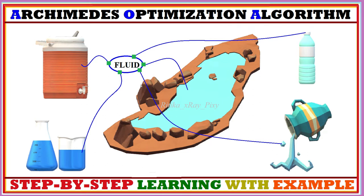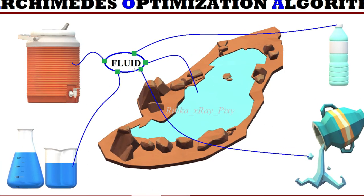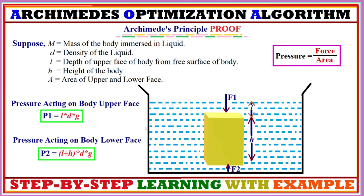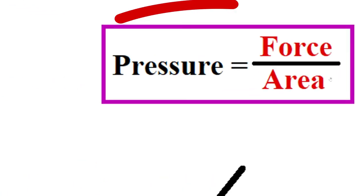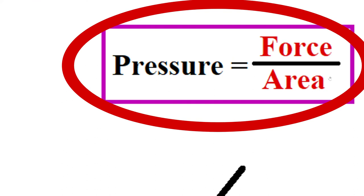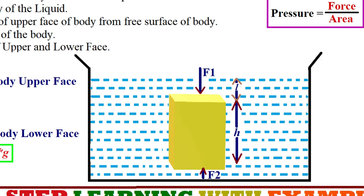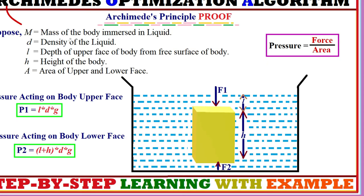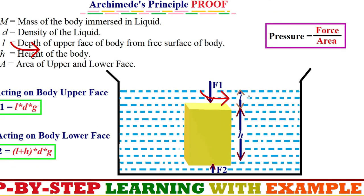Fluid does not have its own shape; it can take any shape and flows under the action of an applied force. We can measure fluid pressure as the normal force acting on a unit surface area of the fluid. For a body immersed in the liquid: m is the mass of the body, d is the liquid density, l is the depth of the upper face of the body from the surface, and h is the body height.